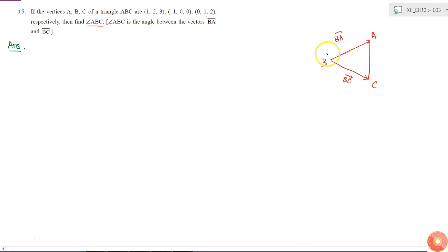We have to find angle ABC, which is this angle. Let me call this theta. We can see that theta is the angle between vector BA and vector BC.